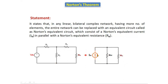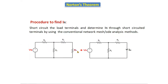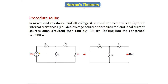I_N is called Norton's current and R_N is called Norton's resistance. There is a procedure to find I_N and a procedure to find R_N. To find I_N: remove the load resistance and short circuit it, then find the current passing through the short circuit terminal — that is Norton's current. Whatever current passes through that branch is Norton's current.